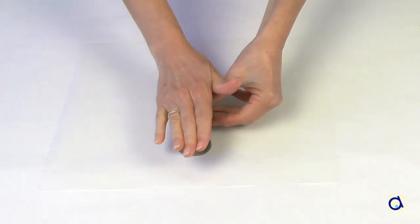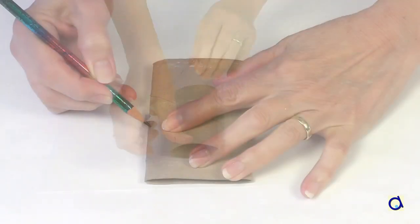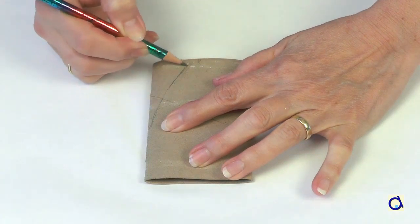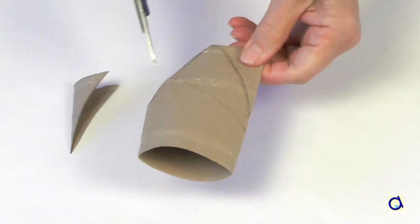Take a toilet paper roll and flatten it. On one of the flattened sides, trace the pointed shape of the mitre. Cut through the two layers of cardboard.